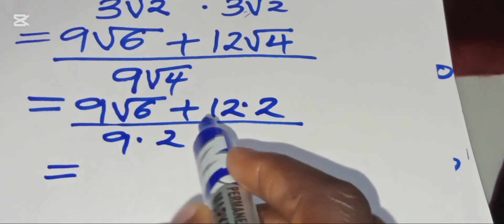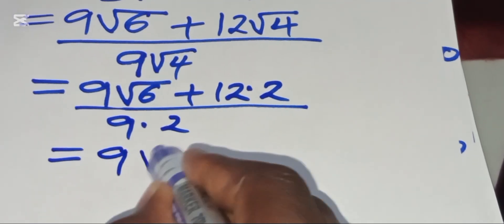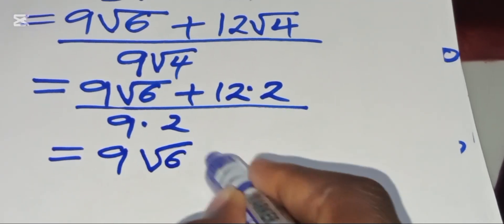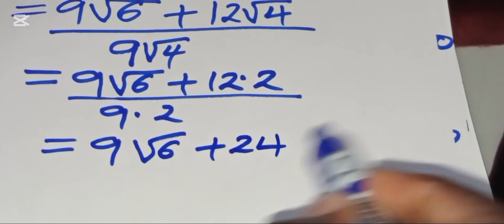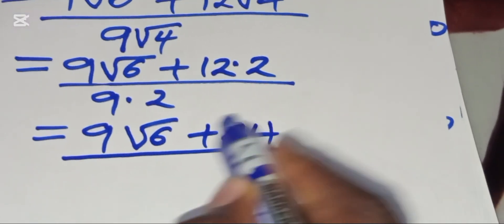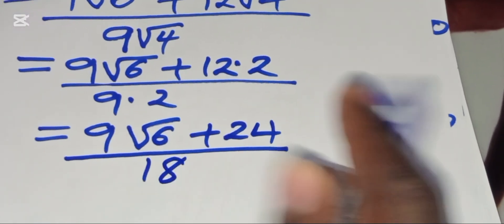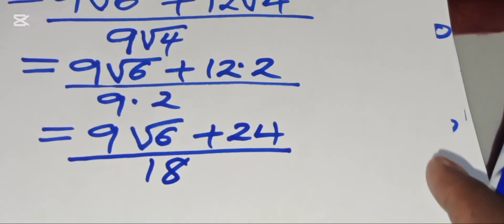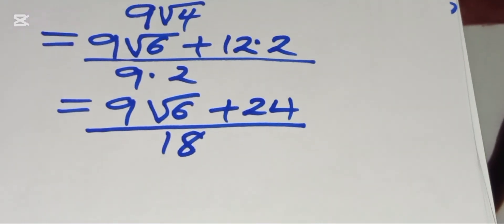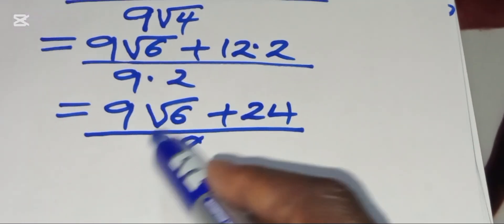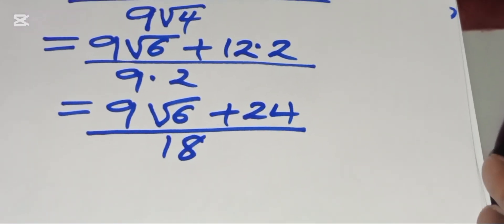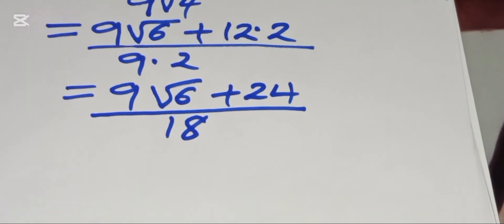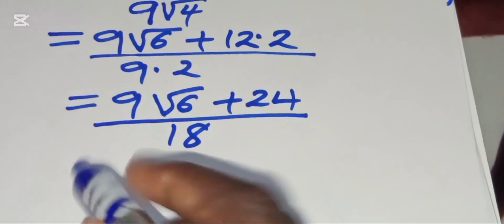This gives us 9 square root of 6 plus 12 times 2, which is 24, divided by 9 times 2 which is 18. So we have 9 square root of 6 plus 24, divided by 18.